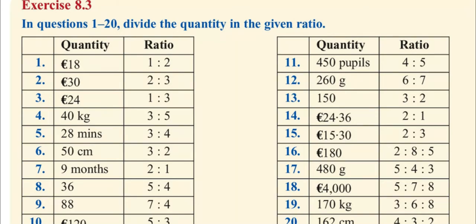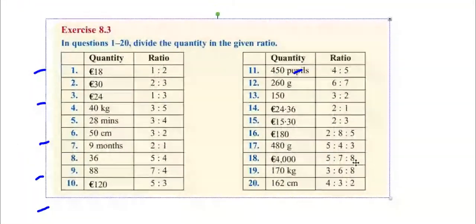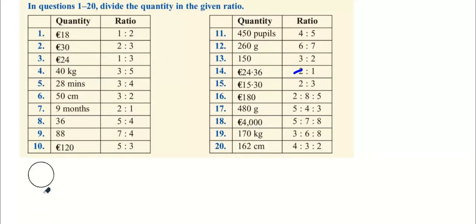Exercise 8.3 on ratios and proportions. I'm going to do some of the odd numbers — one, three, five, seven, nine, eleven. I'll make this smaller to begin with, we're going to need some space to do these questions. Divide the quantity into the given ratio. We're going for the odd numbers, and that should keep us plenty busy. First one: 18 euro. The key thing is to add the ratios together.